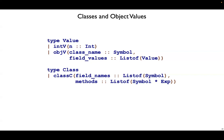In the interpreter now, we'll have two kinds of value: integers and objects. An object has a symbol and then a list of values for its fields. We'll also have a type for class, and the one variant, classC, will have names for the fields, list of symbols, and then methods. Each method is a symbol and an expression.